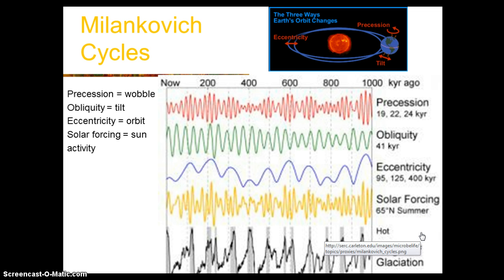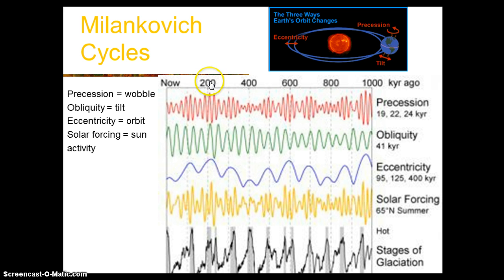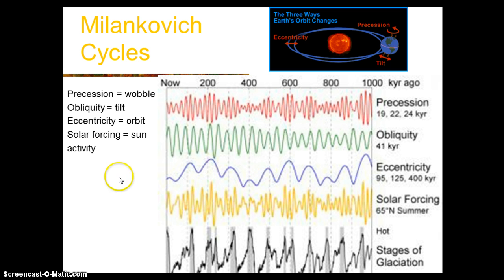Here is a graph showing precession, obliquity, and eccentricity all plotted together, going back to about a million years ago. We can extrapolate that information based on the motion of objects now and project back in time. Obliquity is the tilt, shifting between 22.1 and 24.5 degrees. Eccentricity of the orbit fluctuates between more circular and more oval, with the peaks and drops marking the extremes. Precession is the wobble — the spinning top motion.